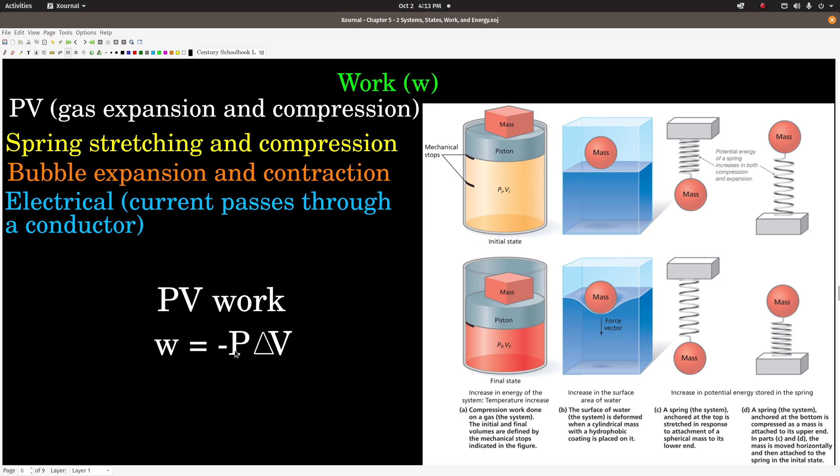So PV work, though, which is what we will focus on - this formula you should remember. And this says that the PV work done on or by a system is equal to negative pressure on the system times delta V. Delta V is the change in volume, so the final minus the initial volume.